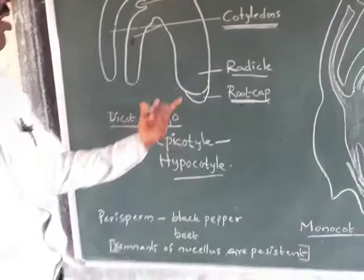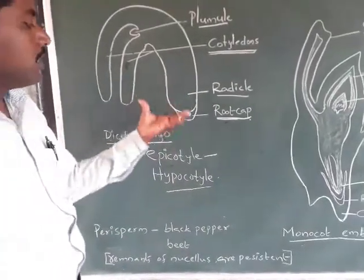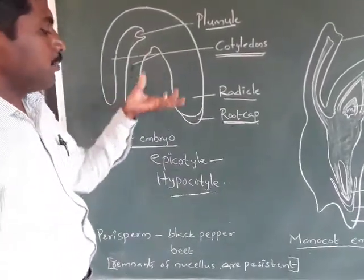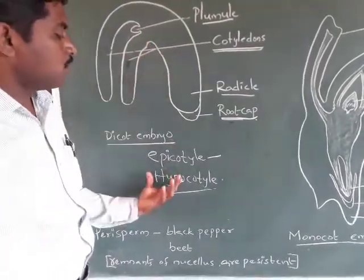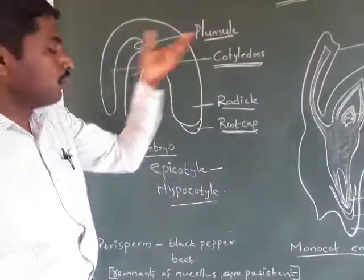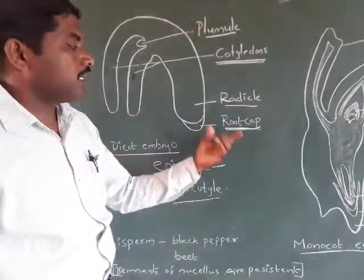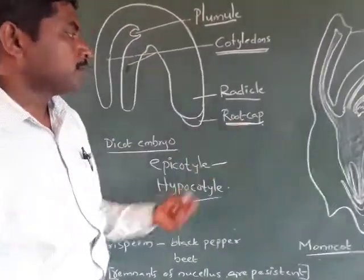So this is about the dicotyledonous embryo. The dicotyledonous embryo has an epicotyl and a hypocotyl. The epicotyl terminates with the plumule and the hypocotyl terminates with the radicle and root cap.